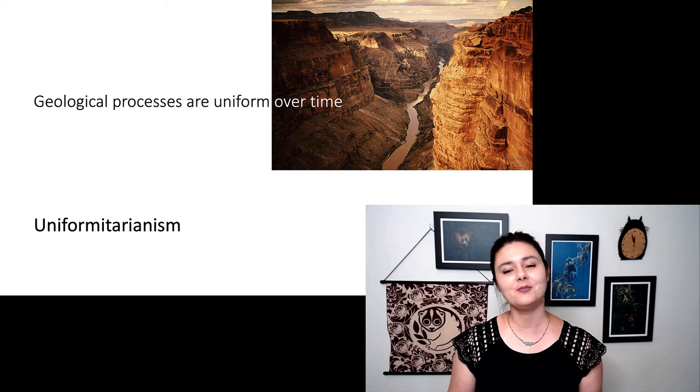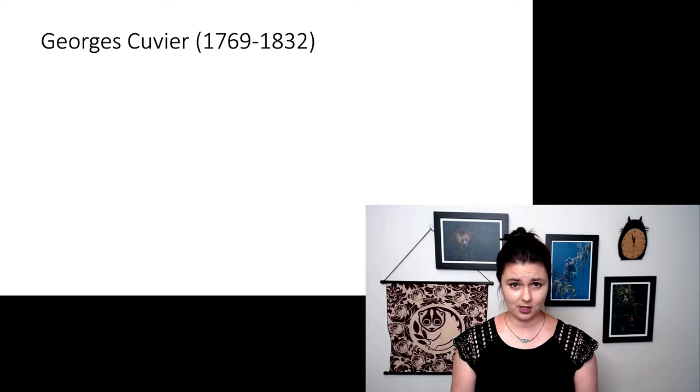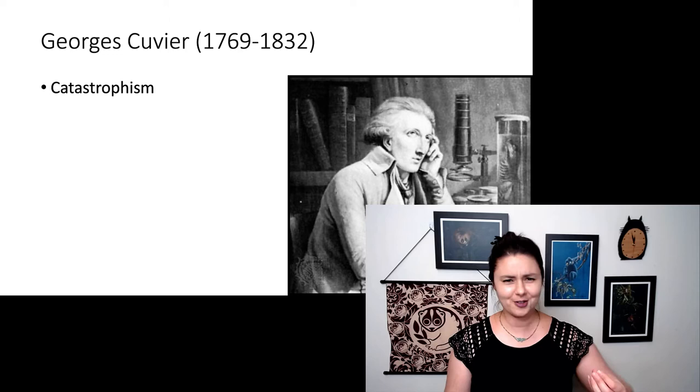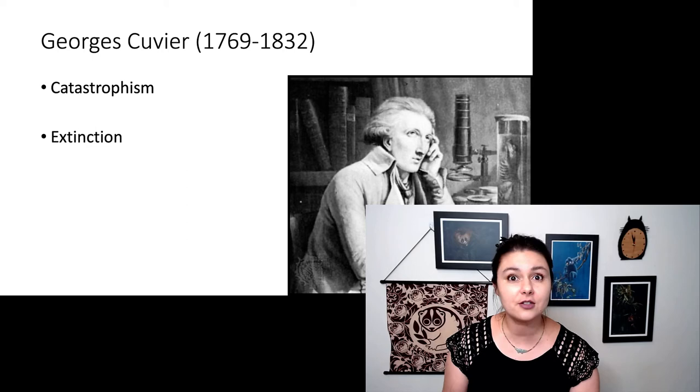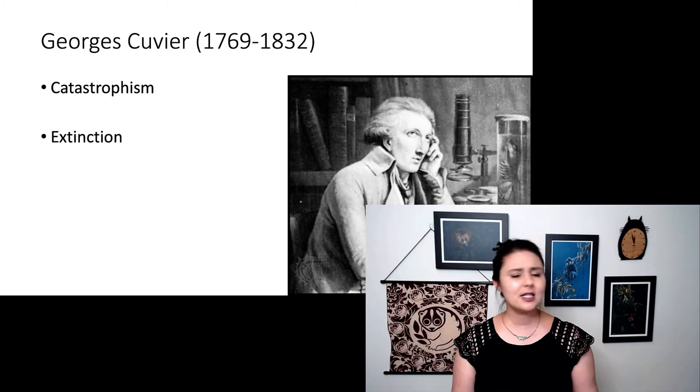Let's talk about Georges Cuvier again. He did not like the idea that the Earth was very old. So he came up with a different theory called catastrophism. He noticed that we have different species of elephants as fossils in different parts of the world.